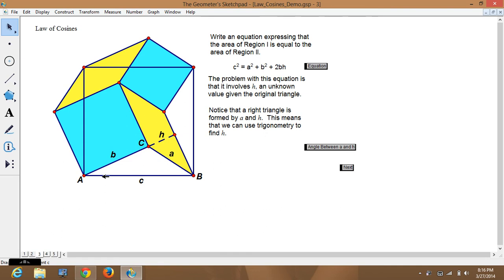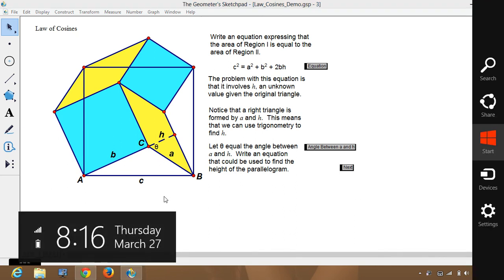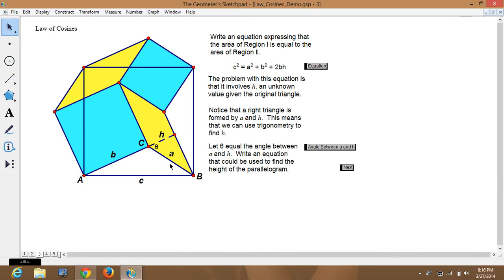We don't really like H being there. Because it's hard to figure out. So, we'd like to get rid of it. And so, we notice that there is a right triangle right here. This means we can use trigonometry to find H. Okay? So, let's find the angle between A and H. It's right here. We'll call that theta. We call that theta right there. Let's find the height of the parallelogram of theta. So, we're going to need H and A.